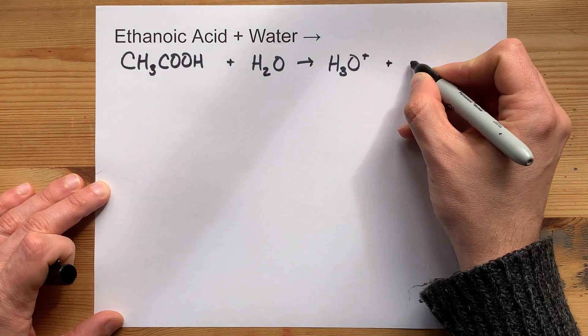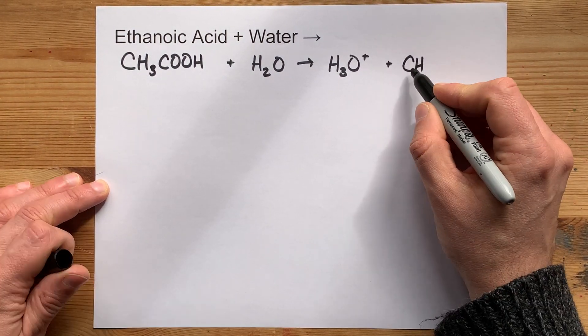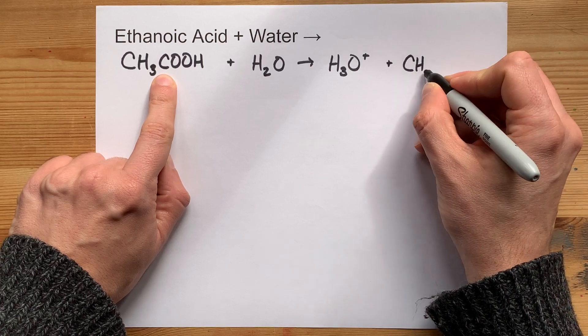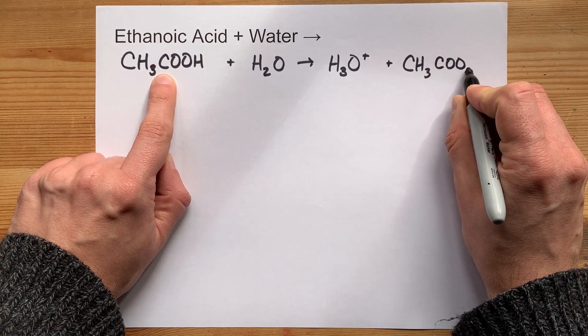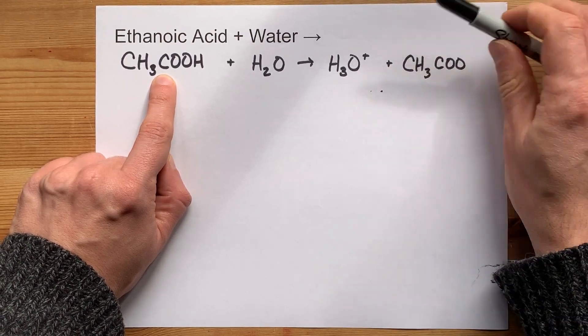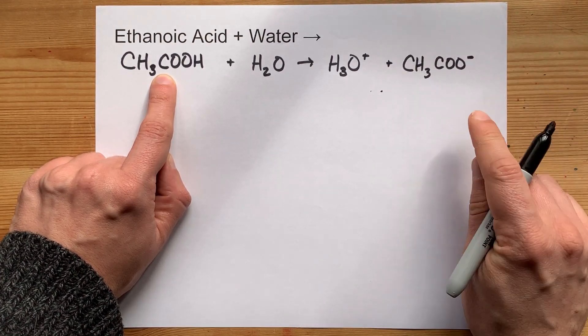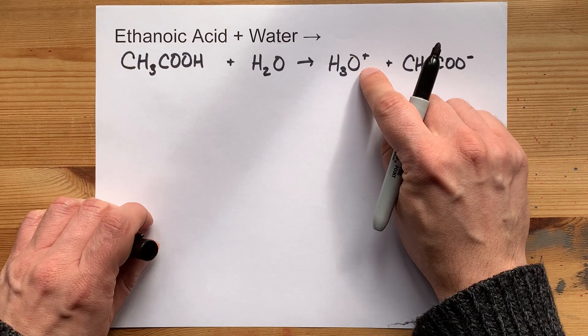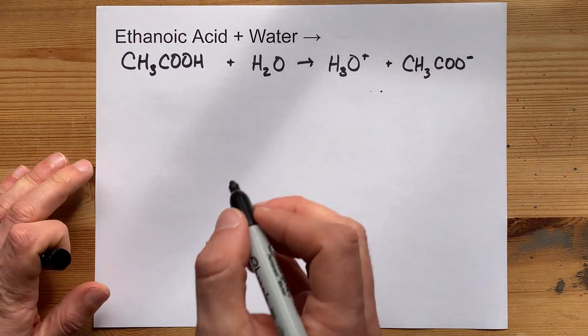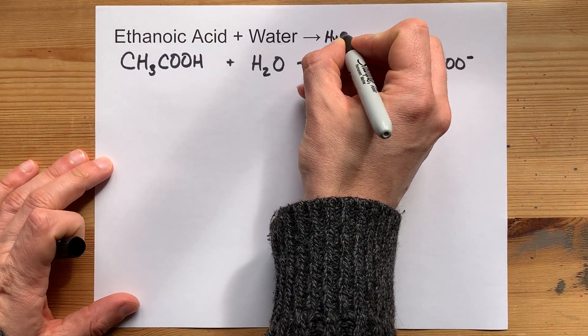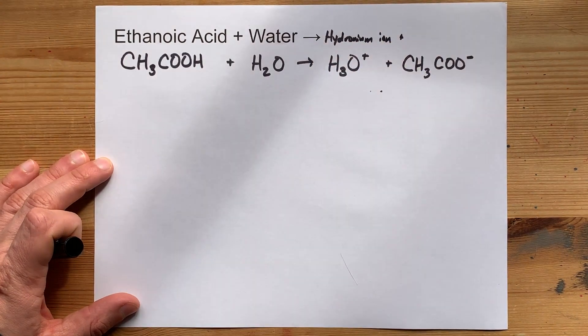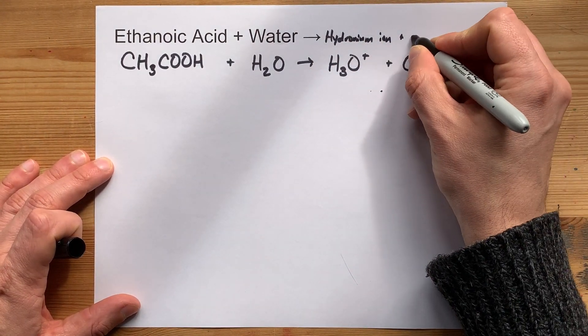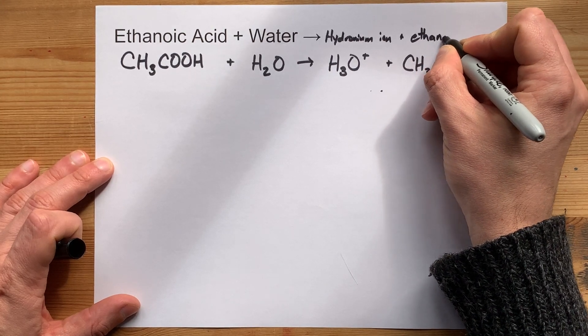That also leaves you with what we call the conjugate base of this acid. It is the acid, but missing an H+. So draw it without that last H, and also give it a minus 1 charge, because you lost the positive charge from the H. So the official answer here in words is a hydronium ion plus this ion, which happens to be called ethanoate.